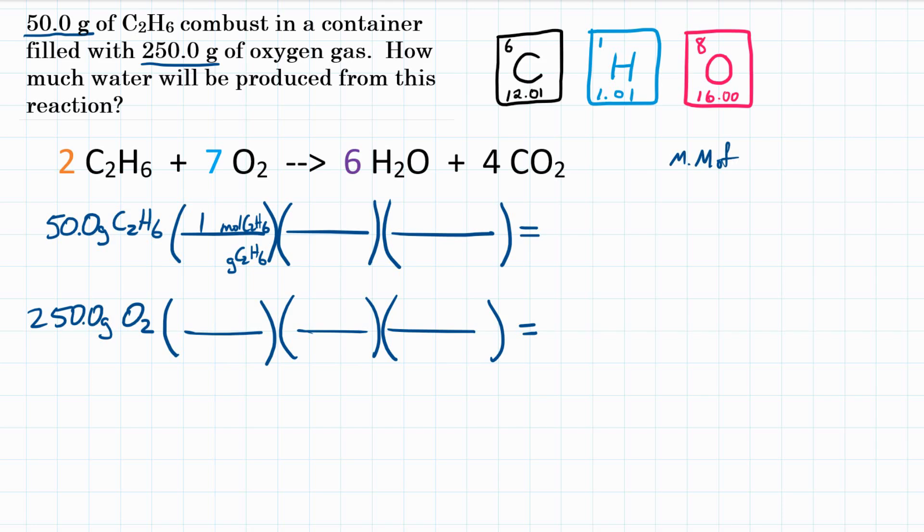Molar mass of C2H6. That is going to be two times the molar mass of carbon plus six times the molar mass of hydrogen. Just the amounts of each element in the chemical formula. So the molar mass of carbon is 12.01. So two times 12.01 plus six times the molar mass of hydrogen. That is 1.01.